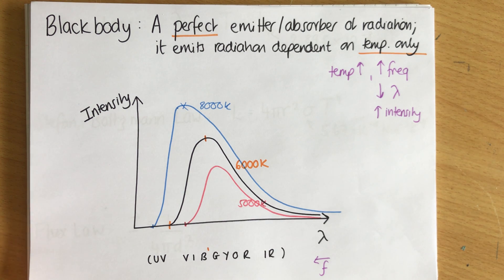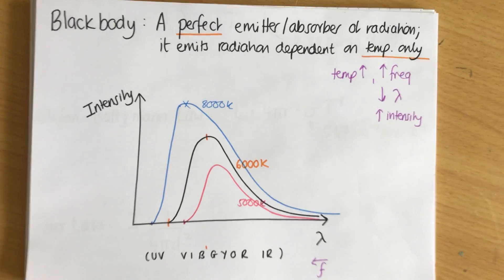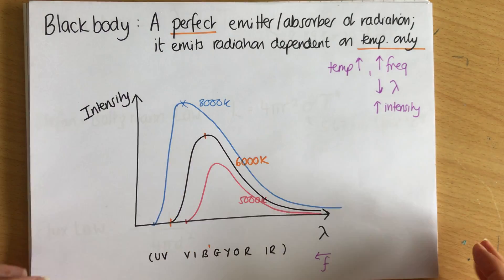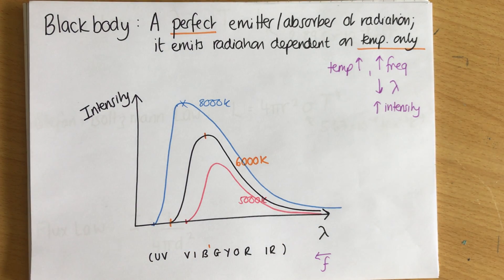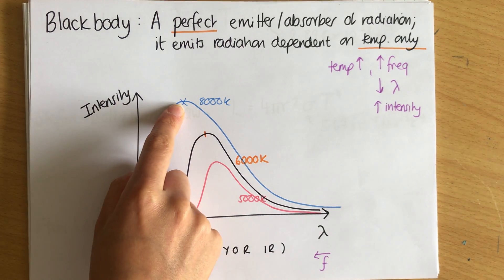And we can get two laws from this, we can get Wien's law from it, and we can get Stefan Boltzmann's law from it. So Wien's law relates this peak and the temperature.